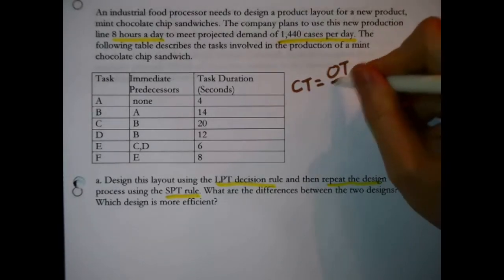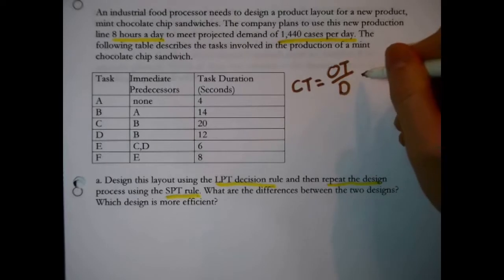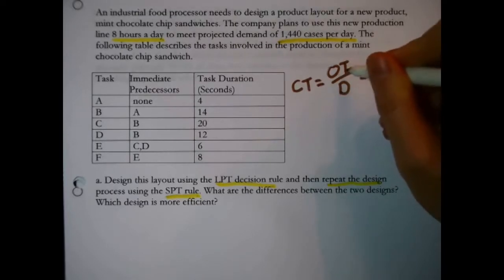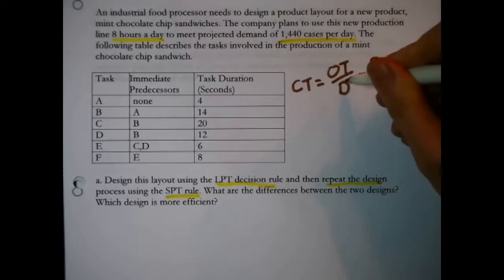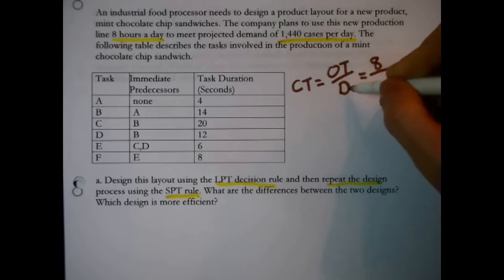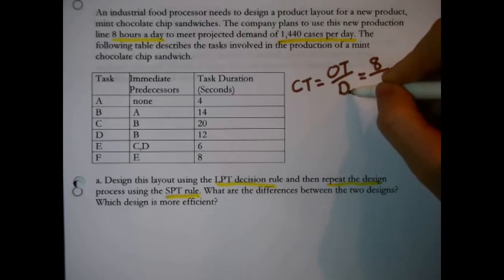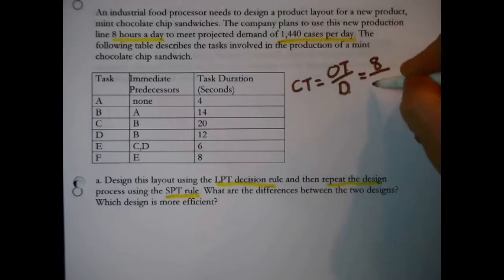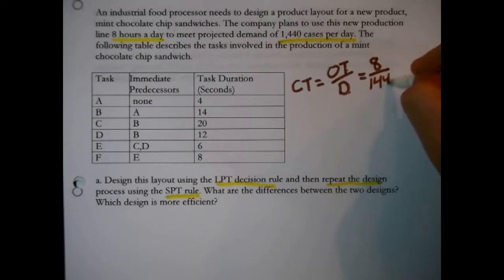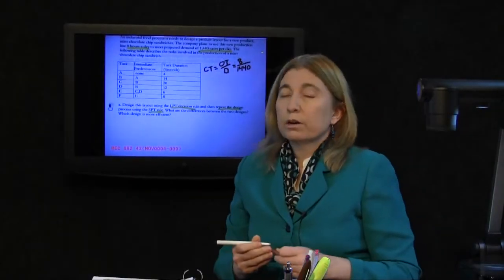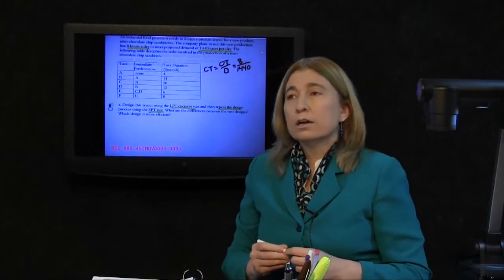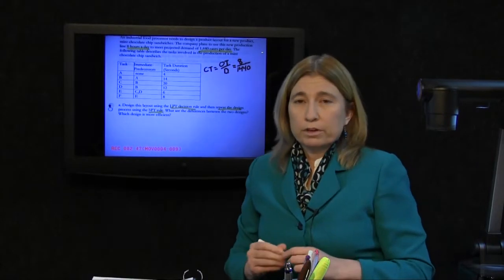We cannot design an assembly line without first determining its cycle time, and it doesn't matter which rule we're going to use — we still need the cycle time. Cycle time is operating time divided by demand. Operating time is how long you want to run the line: eight hours a day. Demand is the output — 1,440 cases. So the cycle time is 8 divided by 1,440.